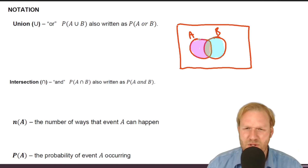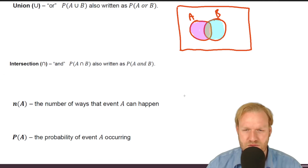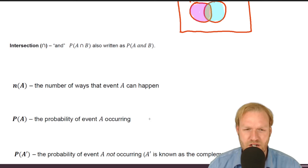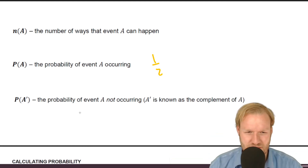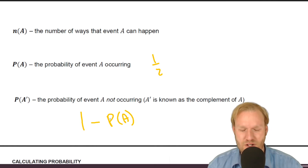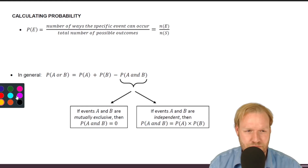The intersection is where they overlap — the probability that both A and B are happening. For example, playing hockey and tennis would be an intersection, whereas people who play hockey or tennis covers all of those. n(A) is the number of ways something can happen. P(A) is the probability of A occurring. The complement — the probability of A not happening — equals 1 minus P(A).